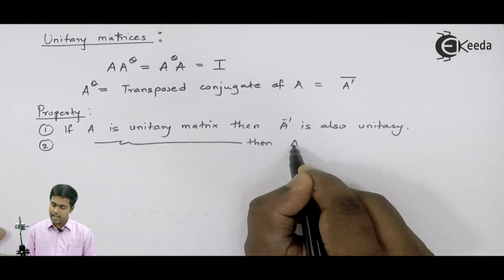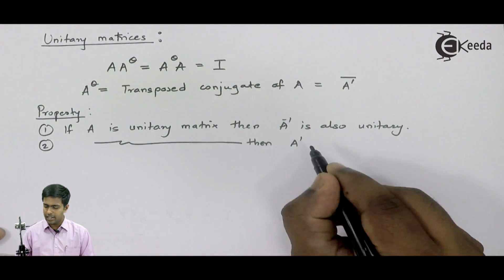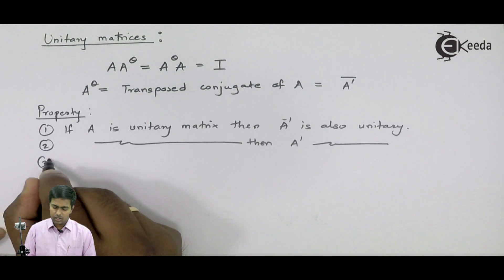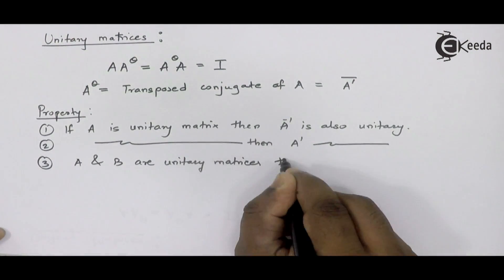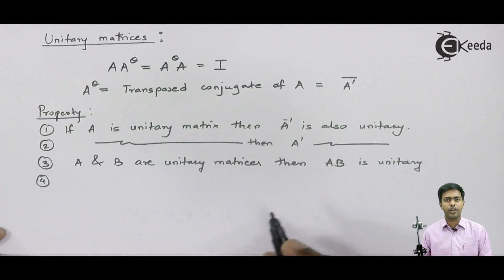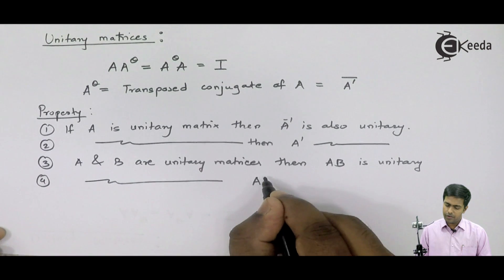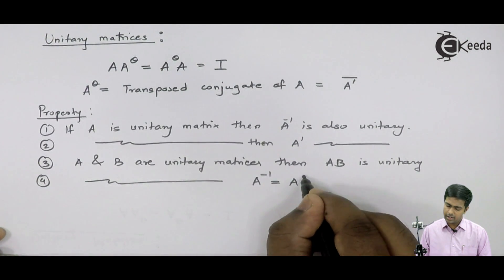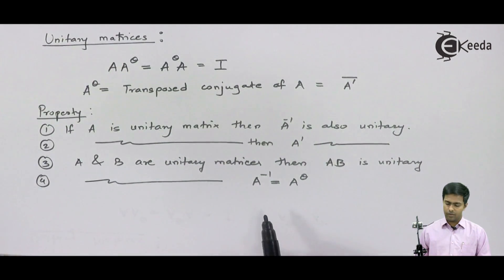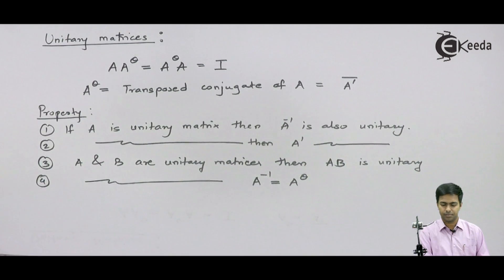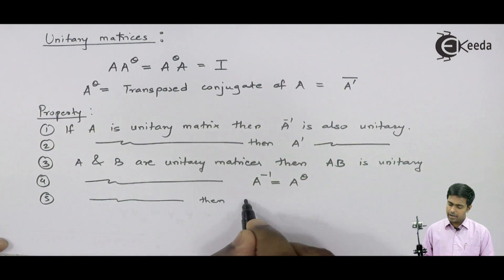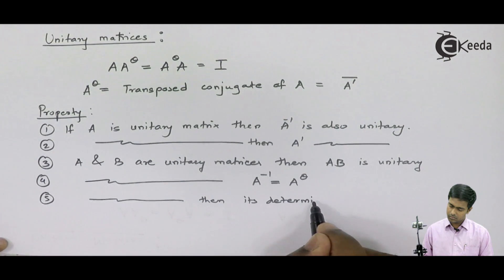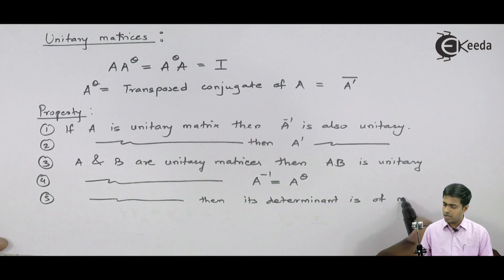The third property: if A and B are unitary matrices, then their product is also unitary. Additionally, if A is a unitary matrix, then the value of A-inverse is equal to A-theta — meaning the inverse of that matrix equals its transpose conjugate. One more important property: if A is a unitary matrix, then its determinant is of modulus unity.